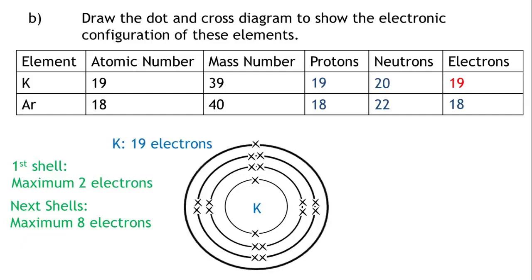Argon has 18 electrons: 2 in the first shell, 8 in the second shell, and 8 in the third shell.